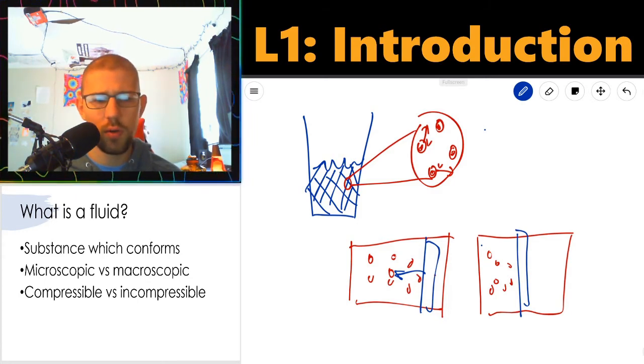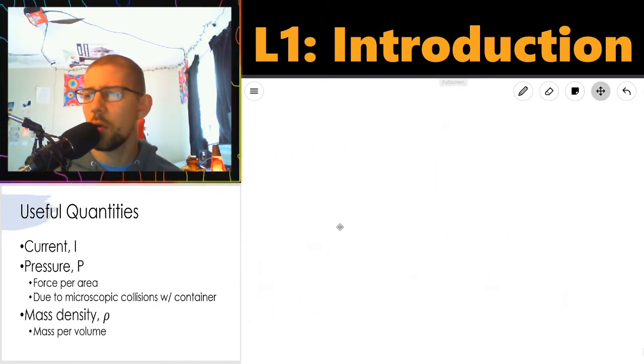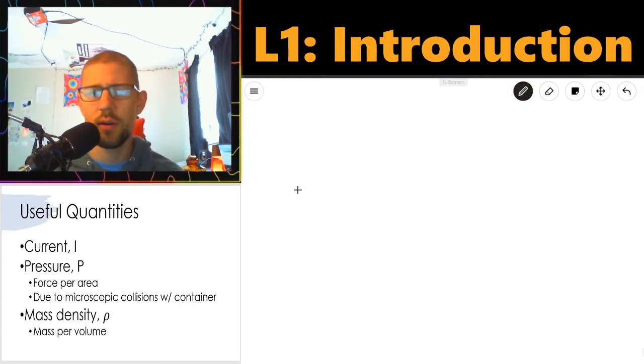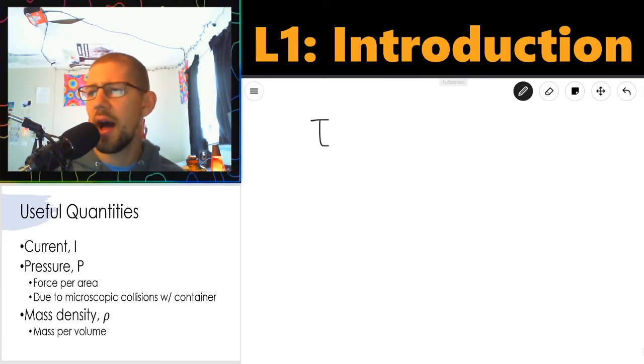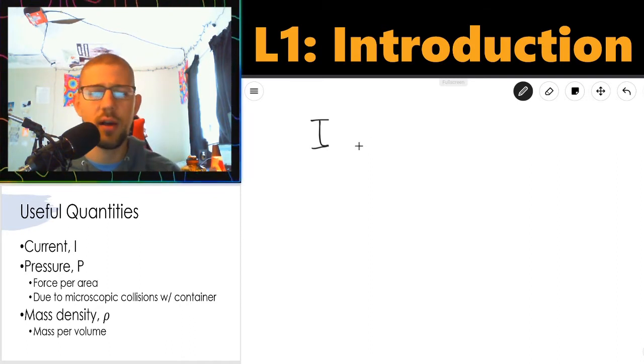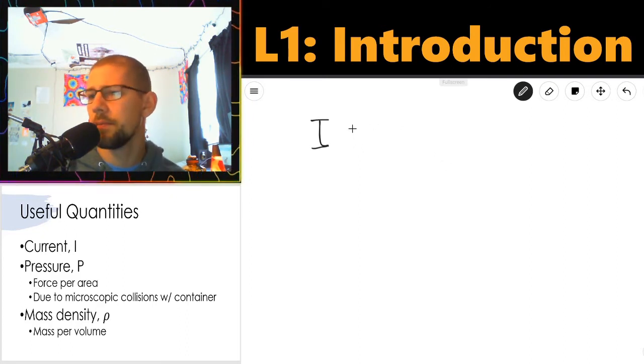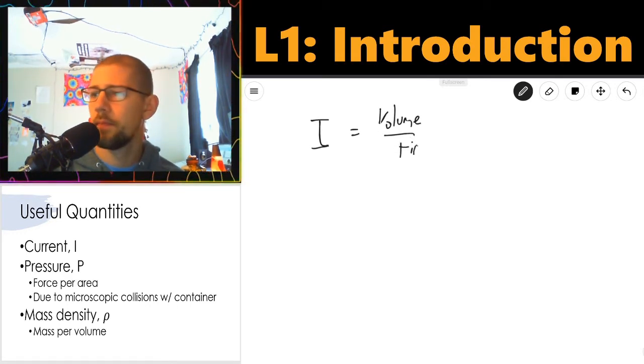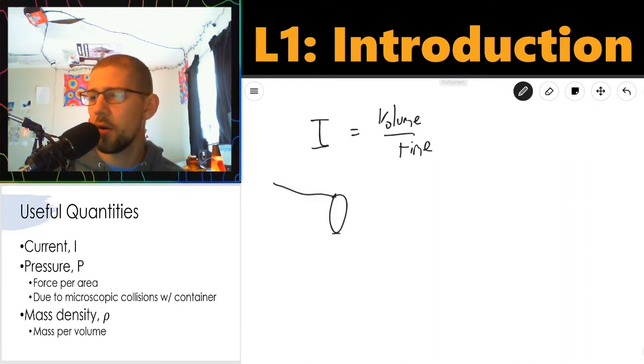Okay, let's run over to some useful quantities. So useful quantities with respect to fluids. We have this first one is current. So current noted by the letter I. So current is basically a measure of how much stuff is flowing, how much stuff is flowing. So typically the way that we measure current is by volume per time. Volume per time. So for example, if I have a fire hose.